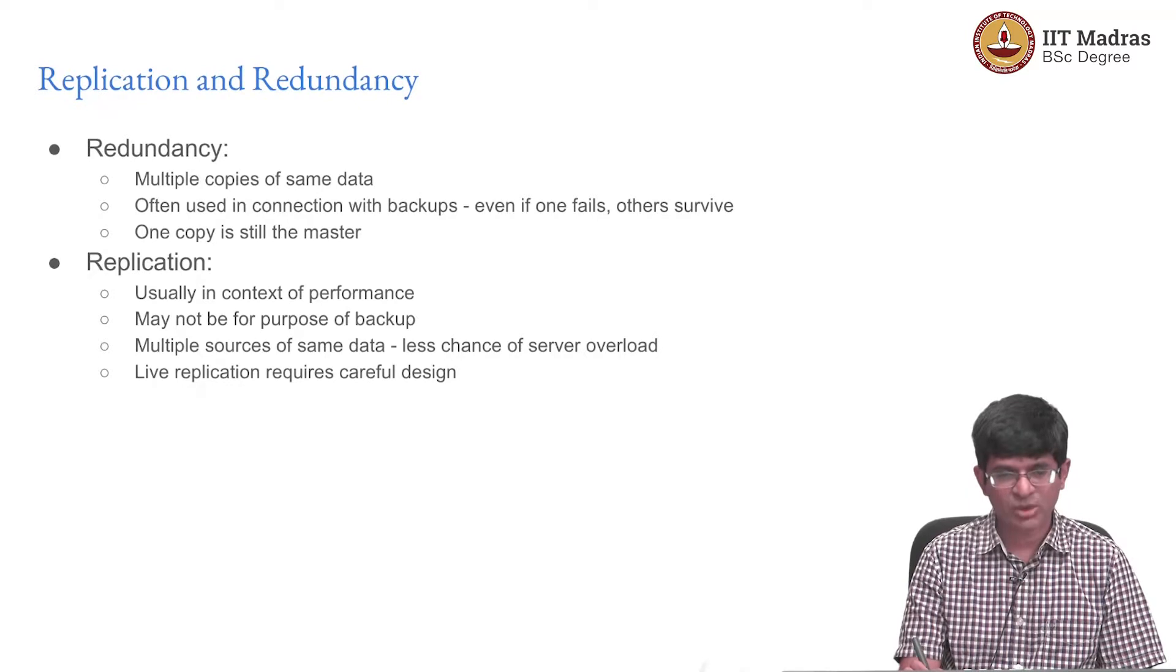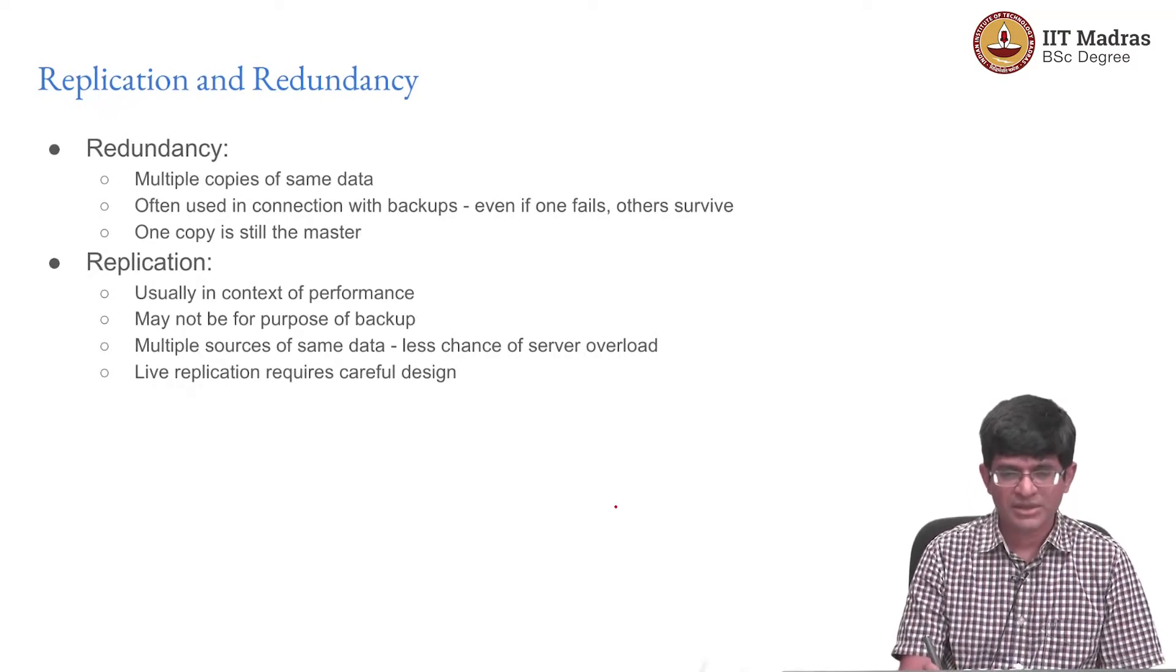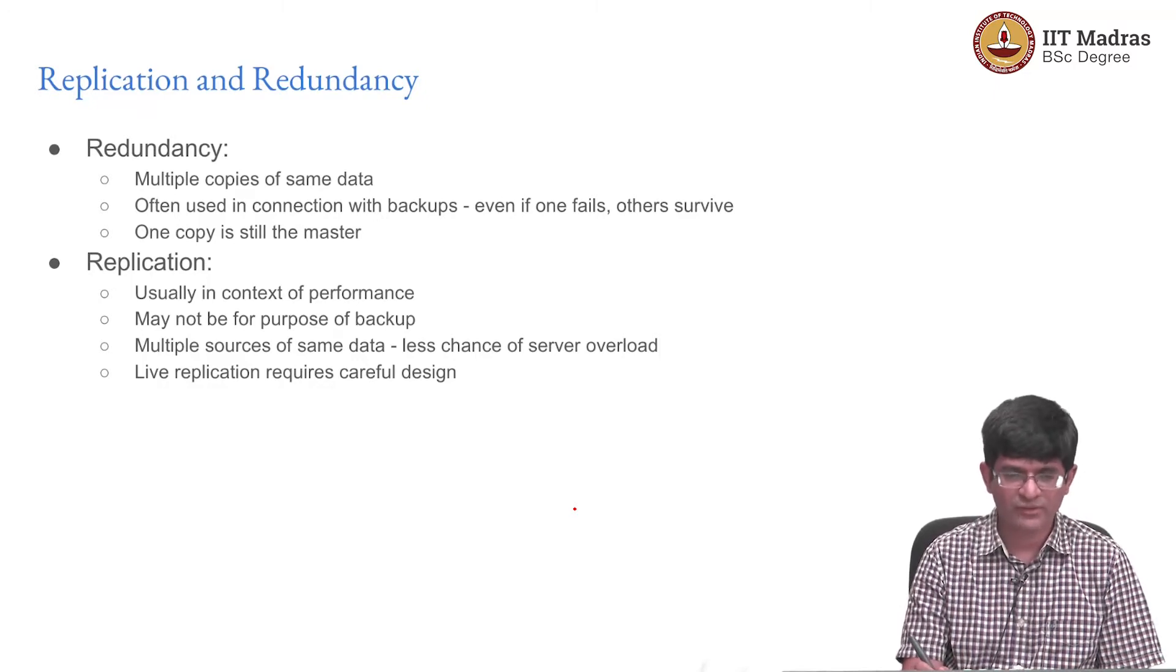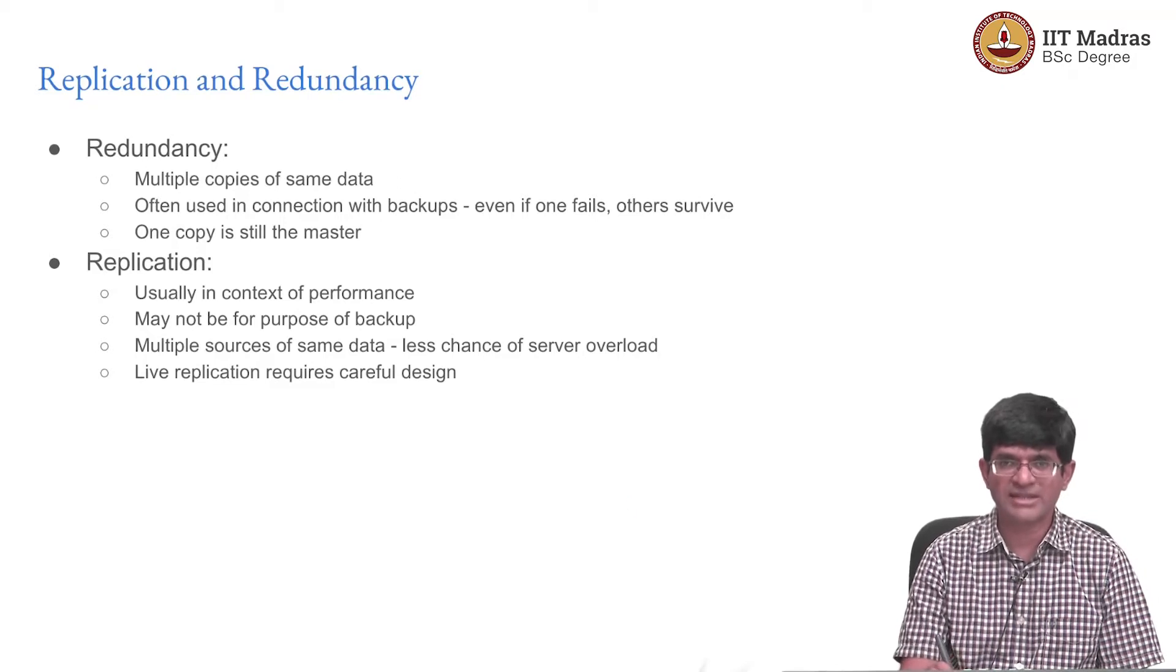The first thing we need to think about is the notion of replication of data. You might want to have multiple copies of data for different reasons. One of them is so-called redundancy, which is usually used for things like backups. Let's say there's a chance my laptop fails—I would like to have a copy of all my photos and documents somewhere else. So even if the laptop fails, I can retrieve it from somewhere else.